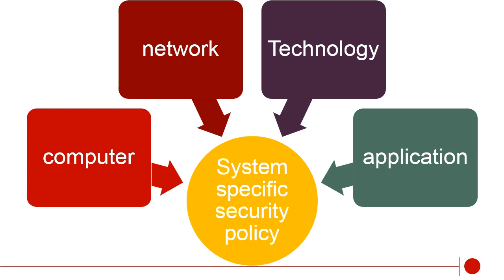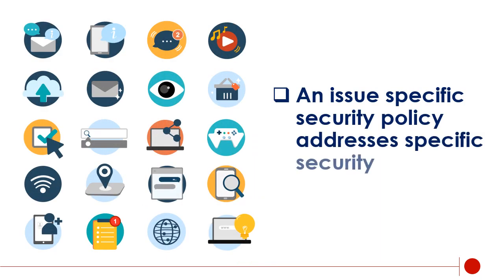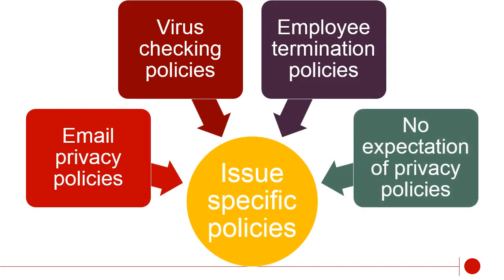This policy type is much more technically focused than an issue-specific security policy. An issue-specific security policy addresses specific security issues. Issue-specific policies include email privacy policies, virus checking policies, employee termination policies, no expectation of privacy policies, and so on. Issue-specific policies support the organizational security policy.